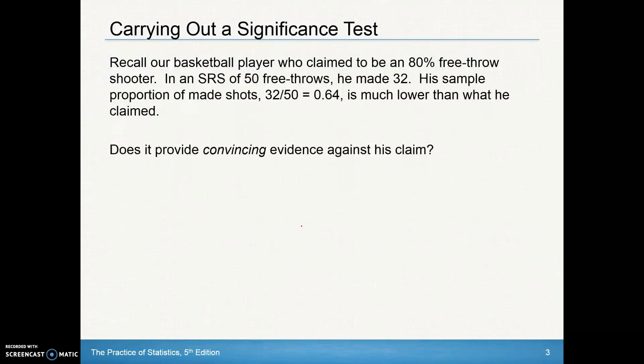So let's carry out a significance test. Recall our basketball player from the previous lesson who claimed to be an 80 percent free throw shooter. So what we do is we ask him to shoot 50 free throws. Basically we're asking him to do an SRS of 50 free throws and he makes 32. So his sample proportion of made shots is 0.64. That's the p hat for this situation. That's the sample proportion.